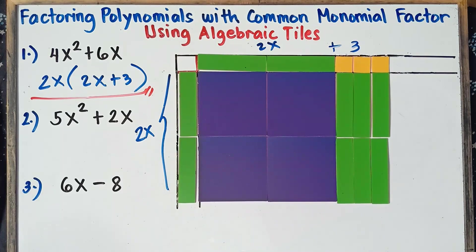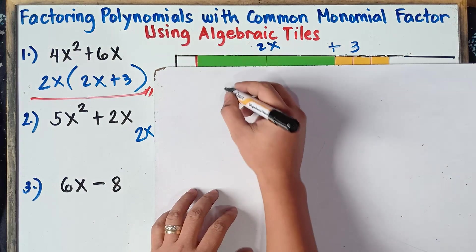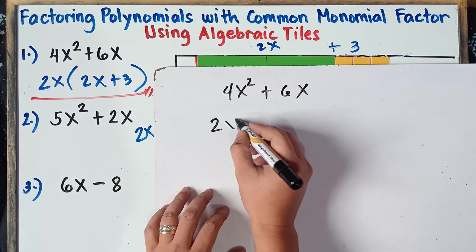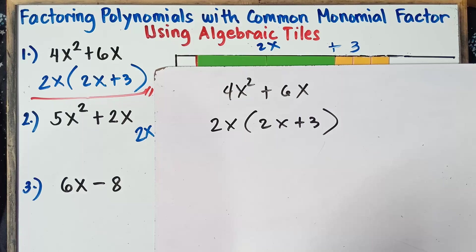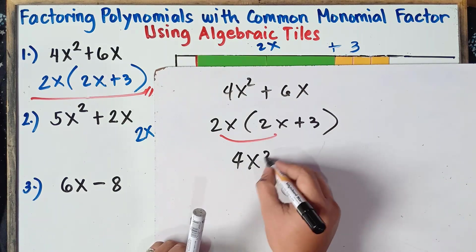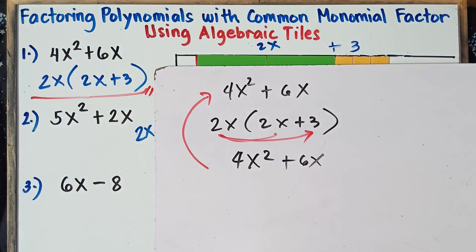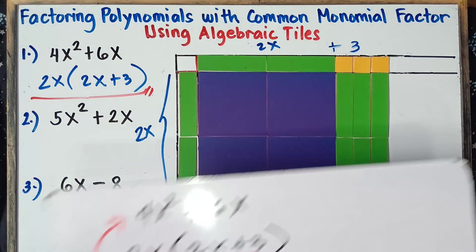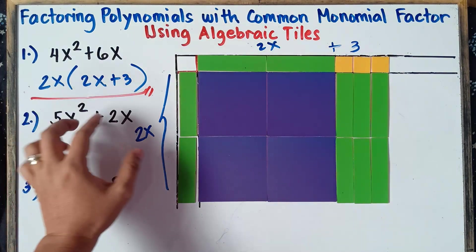That's the answer for example number 1: our greatest common factor is 2x, so we have 2x times the quantity 2x plus 3. We can check our answer using the distributive property: 2x times 2x gives 4x squared, and 2x times positive 3 gives positive 6x — the same answer as our original expression. So we factored it correctly.